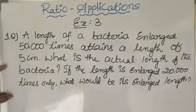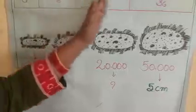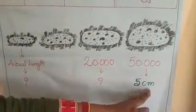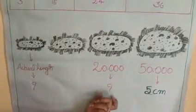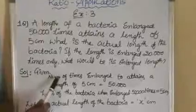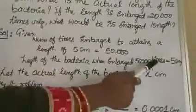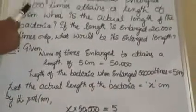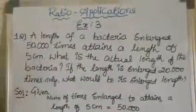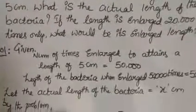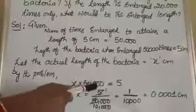We can understand this problem clearly from this figure. I have drawn the figure of a bacteria. The actual length is this. When these bacteria increases to 50,000 times, its length becomes 5 cm. Now we have to find the actual length of the bacteria, and also when it is enlarged to 20,000 times, we have to find the length. Given that the number of times enlarged to attain a length of 5 cm is equal to 50,000. Let the actual length be x. The actual length enlarged 50,000 times means we multiply x by 50,000, which equals 5 cm.